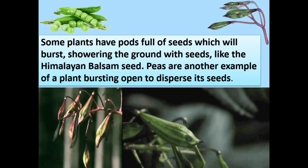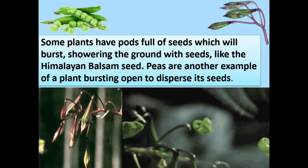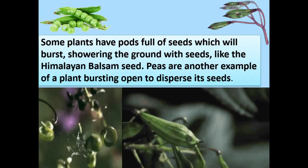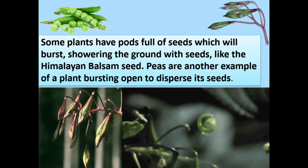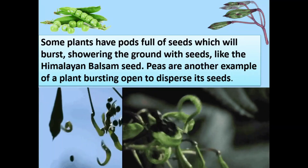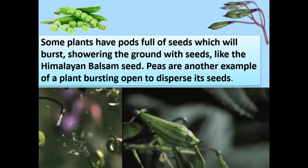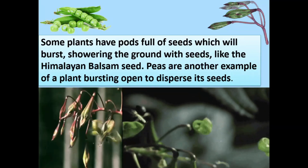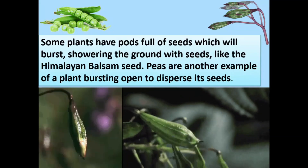Some plants have pods full of seeds, which will burst, showering the ground with seeds, like the Himalayan balsam seed. Peas are another example of a plant bursting open to disperse its seeds.